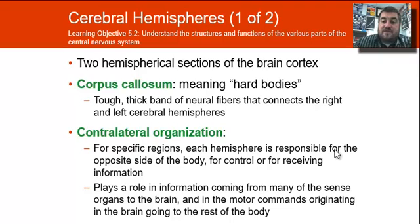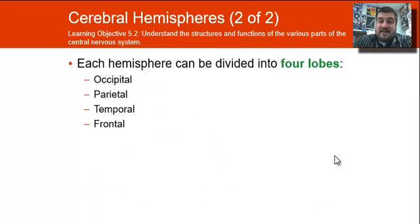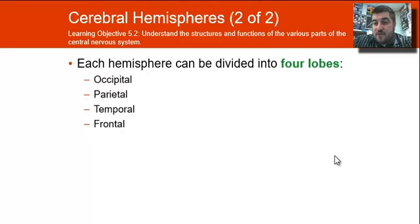The corpus callosum plays a role in information coming from many of the sense organs and the motor commands going to the rest of the body. Each hemisphere on the cortex can be divided into four lobes: your occipital, parietal, temporal, and frontal.